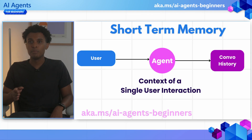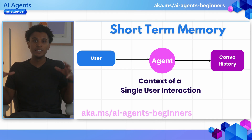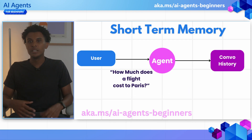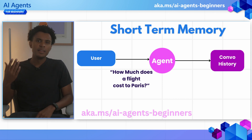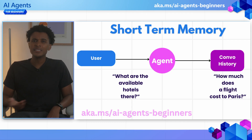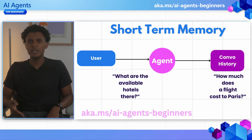There are actually many different types of memory. In the written course, we cover seven different types, but for this video we're going to look at just four. The first two you may have already heard when working with AI agents: short-term memory and long-term memory. Short-term memory covers a single conversation and its context of the current chat. For example, if a user asks how much does a flight cost to Paris and then asks what are the available hotels there, the agent knows 'there' refers to Paris.